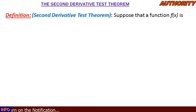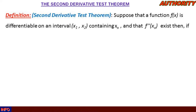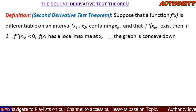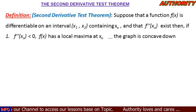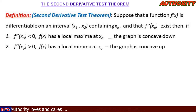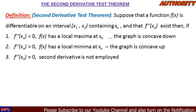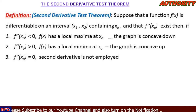The definition states: suppose that a function f(x) is differentiable on an interval x₁ and x₂ containing x₀, and that f''(x₀) exists. Then: (1) if f''(x₀) is less than zero, f(x) has a local maxima at x₀; (2) if f''(x₀) is greater than zero, f(x) has a local minima at x₀; (3) if f''(x₀) equals zero, the second derivative test is not applicable.